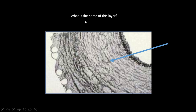What is the name of this layer? This is an elastic artery with three layers. The innermost is the tunica intima, with endothelium and the internal elastic lamina. The middle is the tunica media, with smooth muscle and elastic fibers. The outermost is the tunica adventitia — the connective tissue that anchors the vessel down to surrounding tissue. Remember those three main layers.